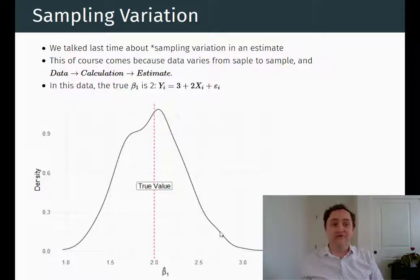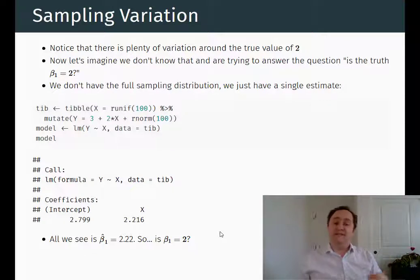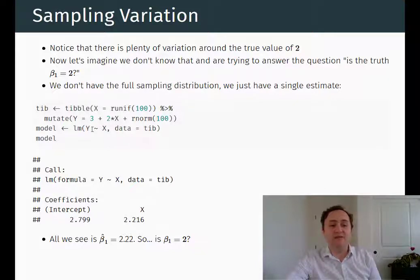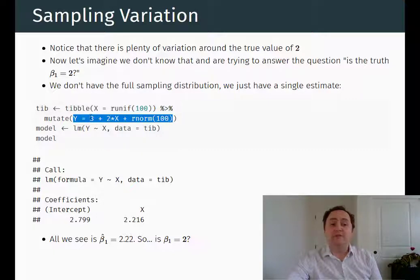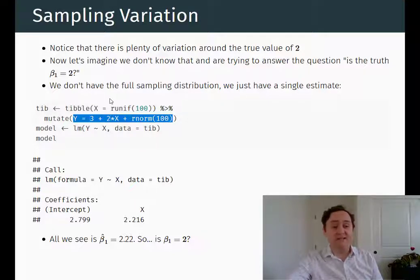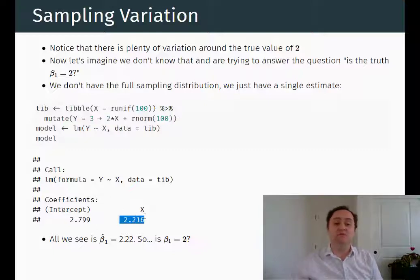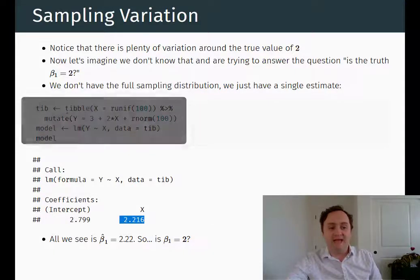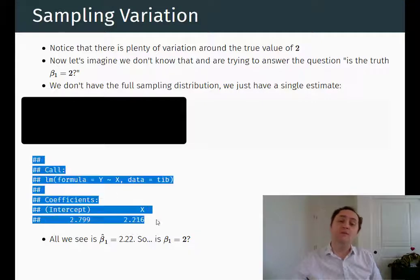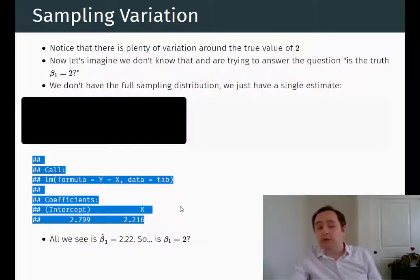So what can we learn based on our one sample? We need to think about what the sampling variation is and how we can handle it. I've created some true data — the true model is y equals 3 plus 2 times x plus some random noise. I get one sample from this data-generating process, run my analysis, and get the estimate 2.22. We know that's a little bit above the truth, but if we couldn't see the true value and could only see this regression, we wouldn't necessarily know we are above the true value. We just see 2.22 — maybe that is the true value, maybe it's above, maybe it's below. We don't know.